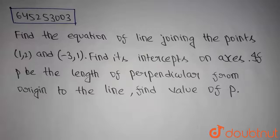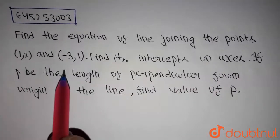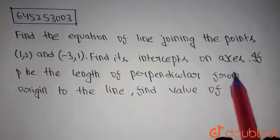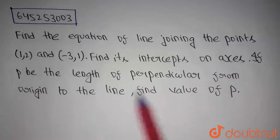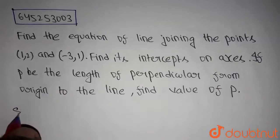Guys, this is our today's question. We have to find the equation of the line joining the points (1,2) and (-3,1) and we have to find its intercepts on the axis. If p is the length of the perpendicular drawn from origin to the given line, then we have to find the value of p. Let's get into the solution.